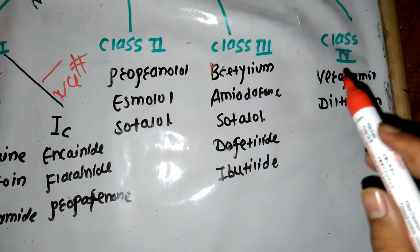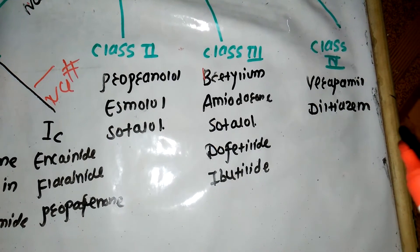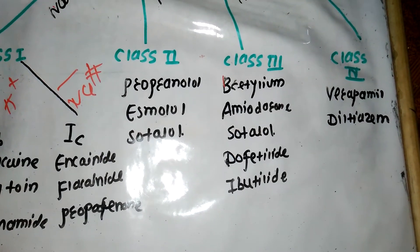After that comes Class 4. Verapamil and diltiazem. Dihydropyridines don't come here because they don't work on the heart - they only work on blood vessels.